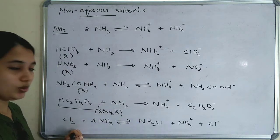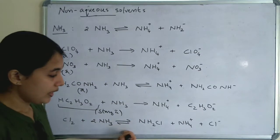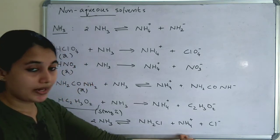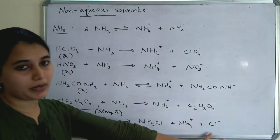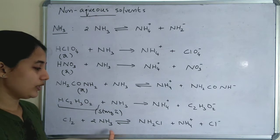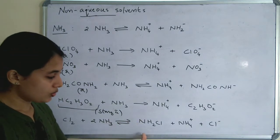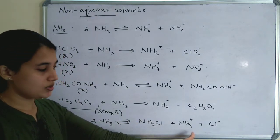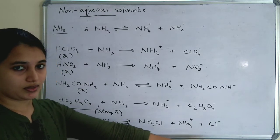Cl2 + 2 NH3 → NH2Cl + NH4⁺ + Cl⁻. When Cl2 and 2 NH3 combine, NH2Cl and NH4⁺ are obtained.